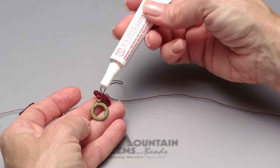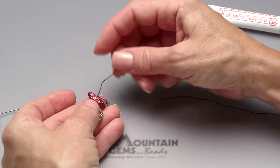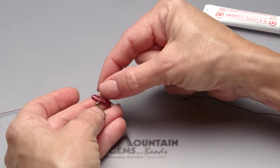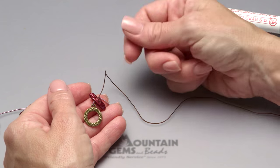Add a drop of the GS Hypo cement right to that knot and allow it to cure. Once it's set, trim this tail using a nice pair of fine tip scissors and your design is finished.